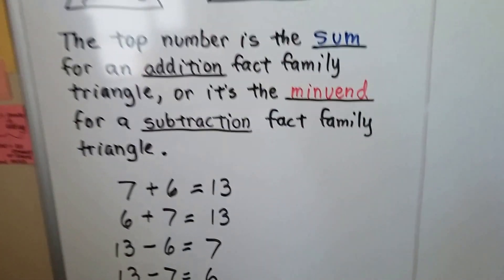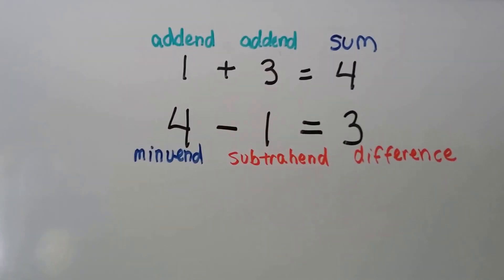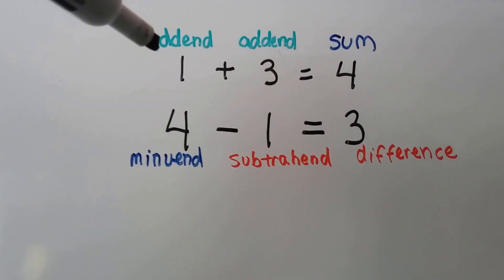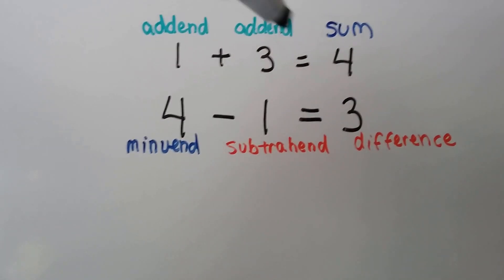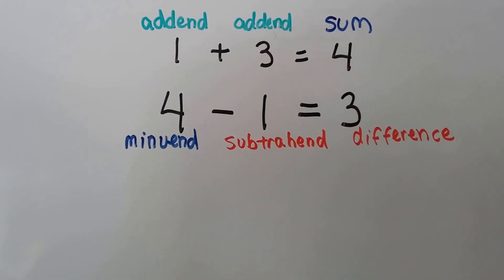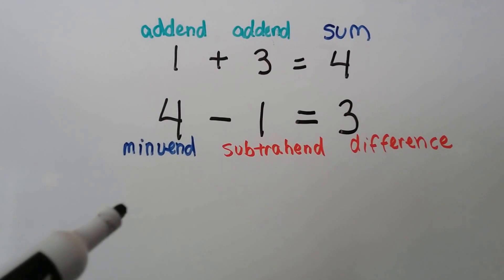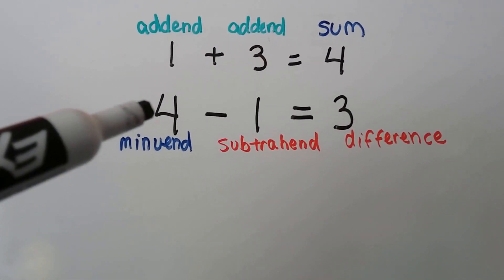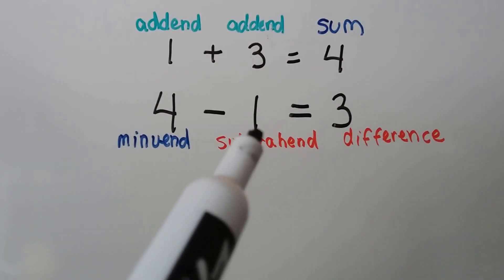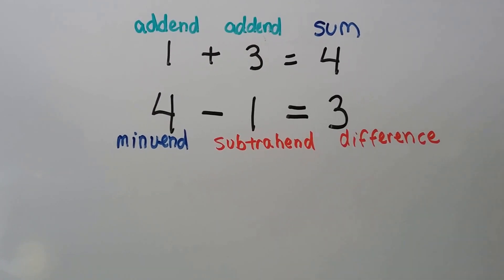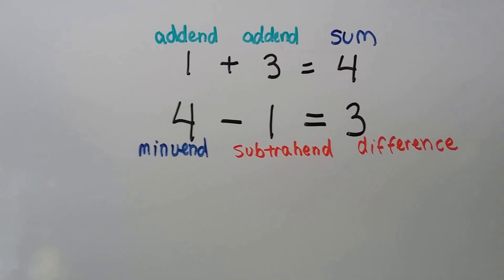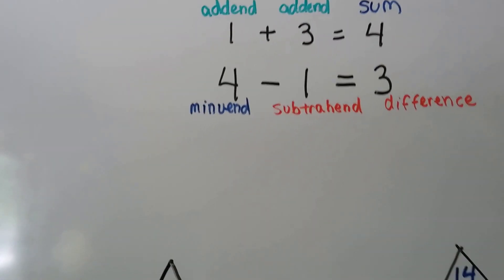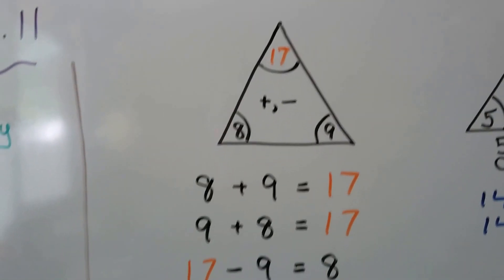Remember that in an addition sentence, the addends are the numbers being added and the sum is what it equals. In a subtraction sentence, the first number is the minuend, the second is the subtrahend, and the answer is called the difference. All right, so let's take a look at some fact families that go up to 18.